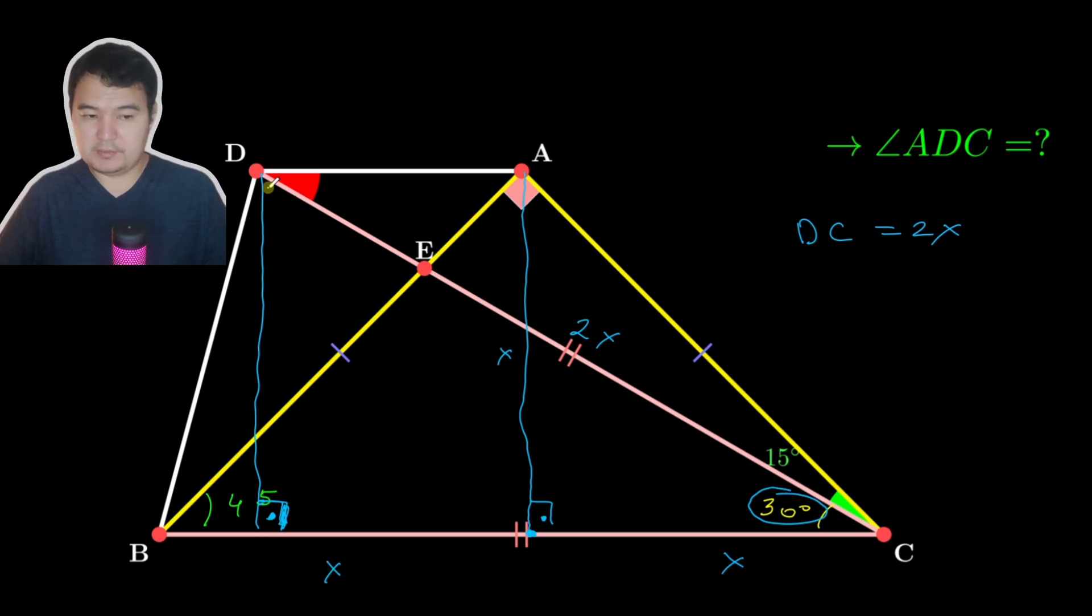That makes this triangle a special triangle: 30-60-90. And opposite to 30 degrees, it's X.